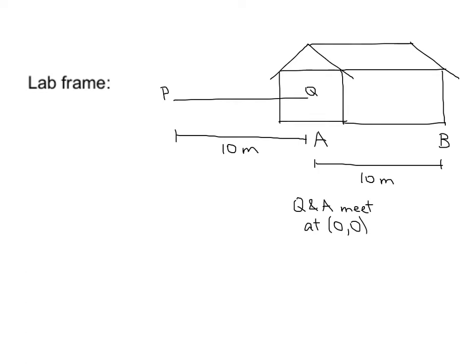At rest, the barn's length is 10 meters. At rest, the pole's length is 20 meters. But because, in this instance, we are in the lab frame, and the pole is moving close to light speed at gamma equals 2, the pole appears to us as 10 meters long.